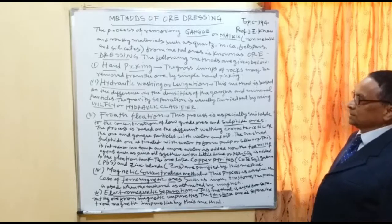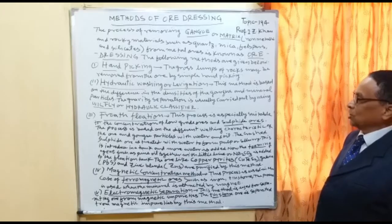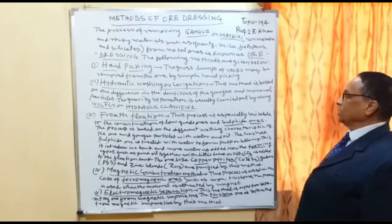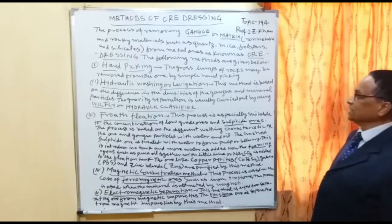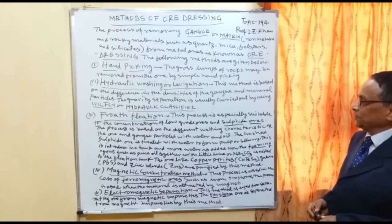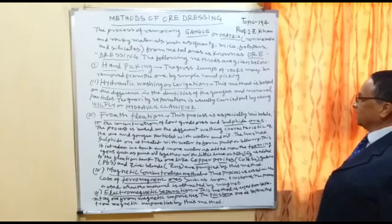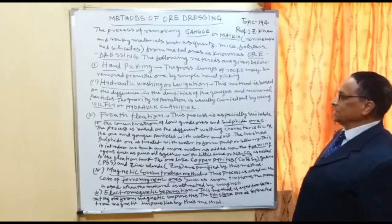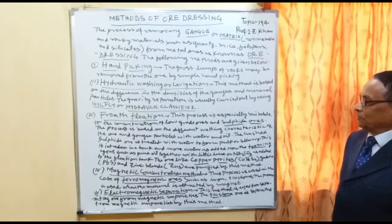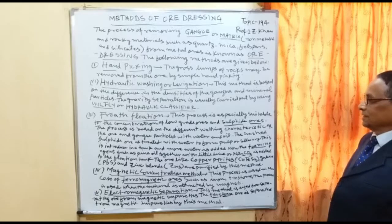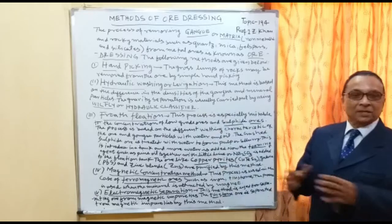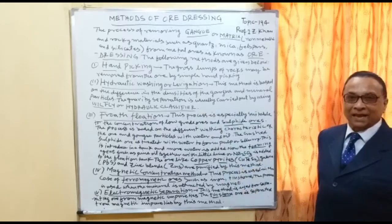Number two is hydraulic washing, also known as levigation. This method is based on the difference in the densities of the gangue mineral particles. Gravity separation is usually carried out using a wilfley table or hydraulic classifier. This instrument is used to separate gangue from ore on the basis of their densities.